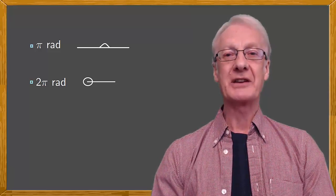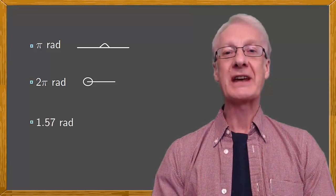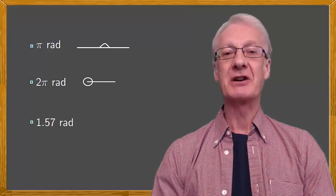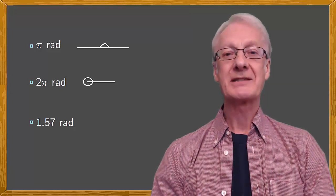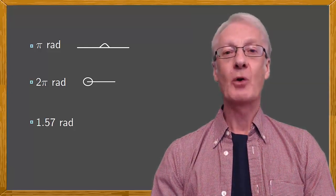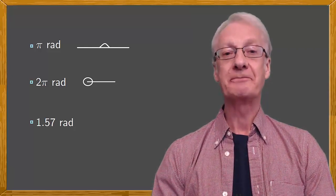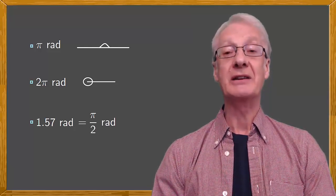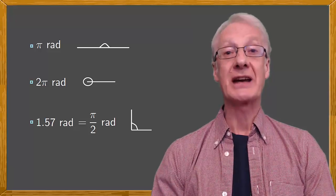Now let's complicate things a bit. How about an angle of 1.57 radians? What does that look like? That may seem much harder, but I'll give you a clue. 1.57 is approximately pi over 2. In other words, 1.57 radians is roughly pi over 2 radians. So now you can see that it corresponds to this angle.